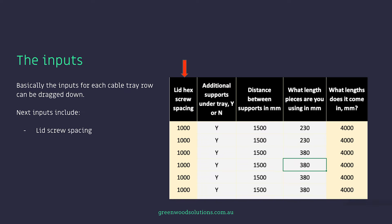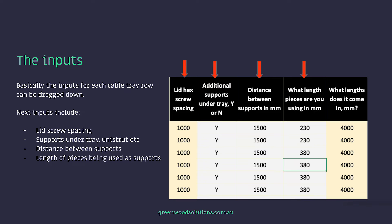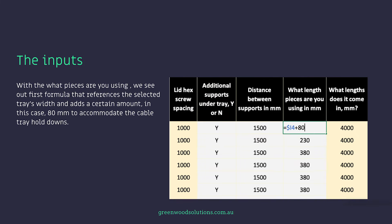The next inputs include the lid screw spacing, the supports under the tray — the unistrut, etc. — the distance between the supports, the length of pieces being used as supports, and the length it comes in. With the 'what pieces are you using' category, we see our first formula that references the selected tray's width and adds a certain amount, in this case 80 millimetres, to accommodate the cable tray hold-downs.